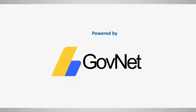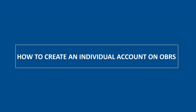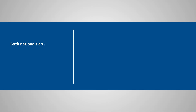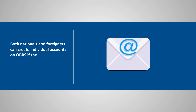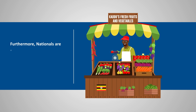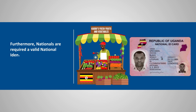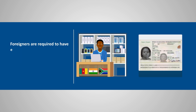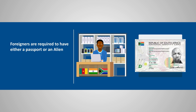How to Create an Individual Account on OBRS. Both nationals and foreigners can create individual accounts on OBRS if they have a valid email address. Furthermore, nationals are required to have a valid national identification number, which is commonly known as NIN, while foreigners are required to have either a passport or an alien ID that is uploaded during the application process.